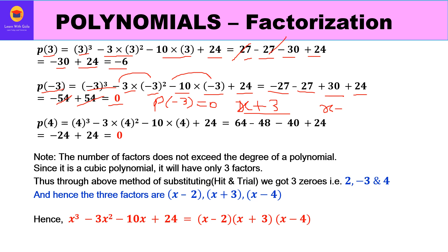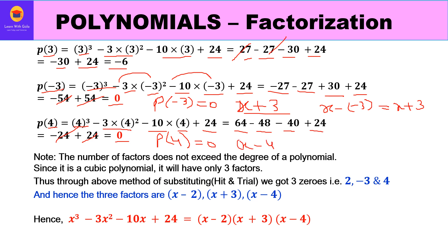x + 3 is a factor because x - (-3) = x + 3, by the factor theorem. Now trying x = 4: 4³ - 3(4²) - 10(4) + 24 = 64 - 48 - 40 + 24 = 0. So p(4) = 0, meaning x - 4 is another factor.